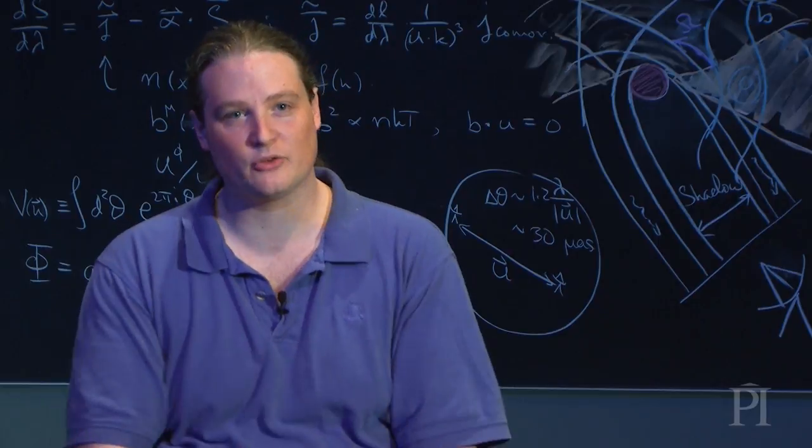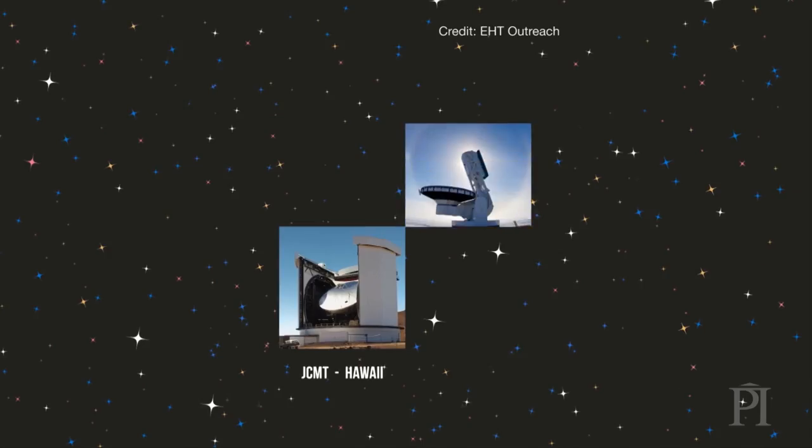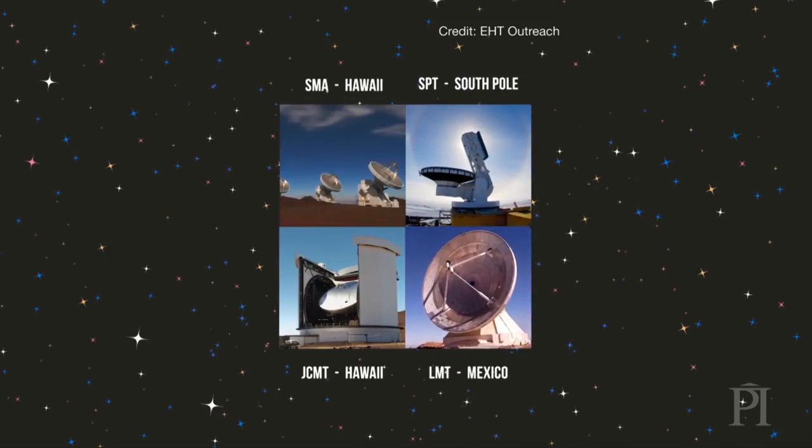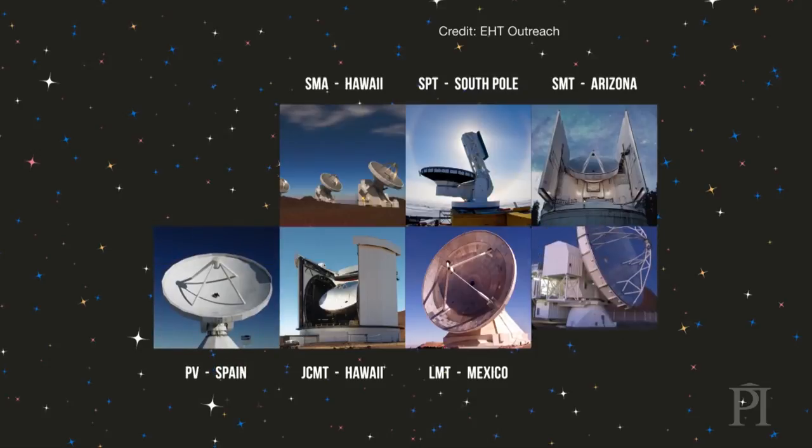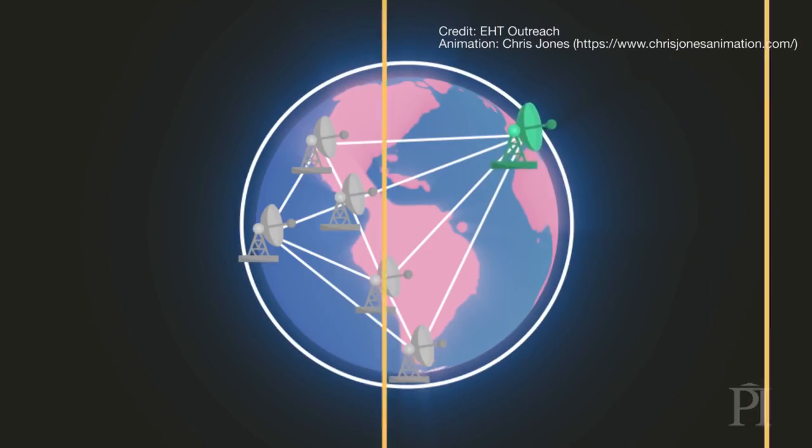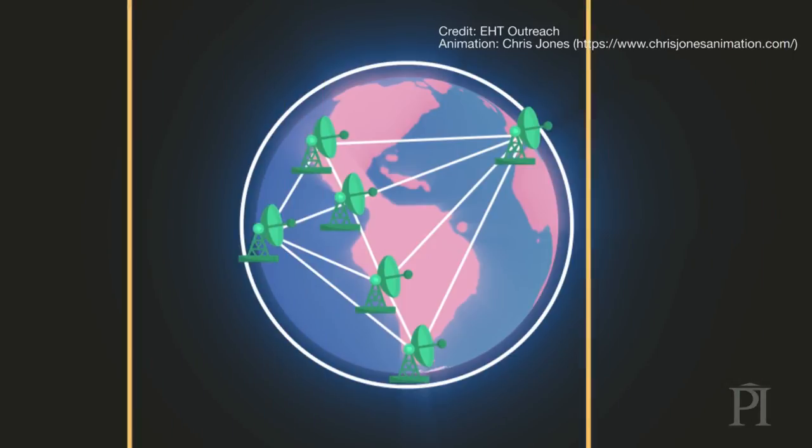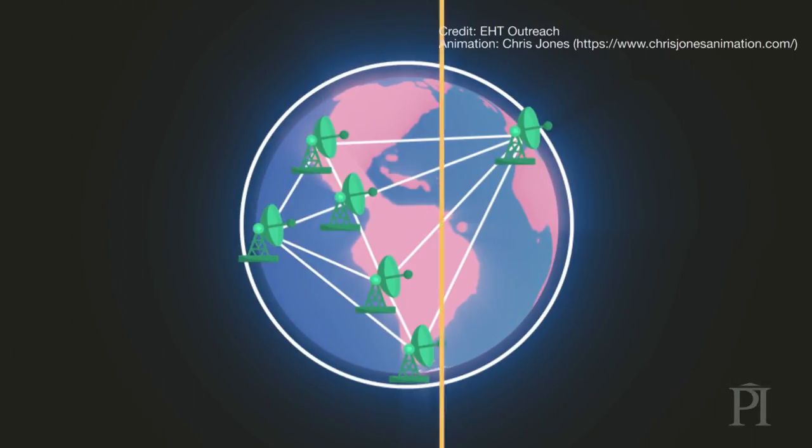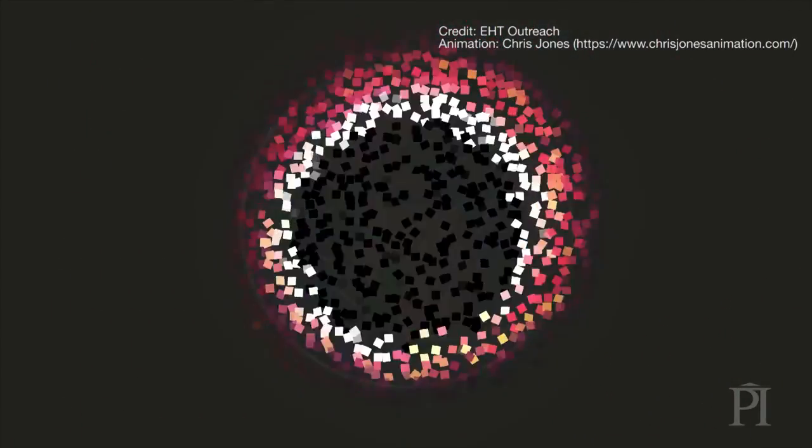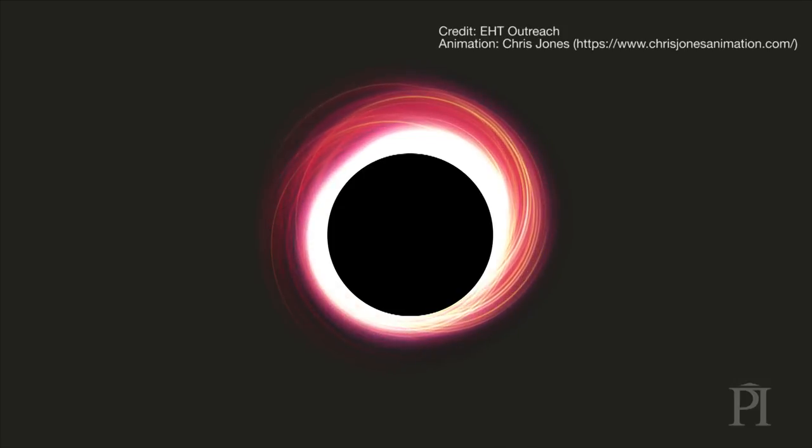And that's going to happen because we have this brand new resource, the Event Horizon Telescope. It's a broad international collaboration to build a global array of telescopes that has the capability for the first time in the history of astronomy to resolve the horizon of a black hole. Make a picture in which the horizon shows up as a shadow on all of the surrounding luminous material.